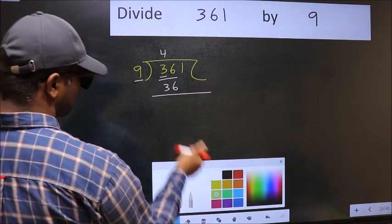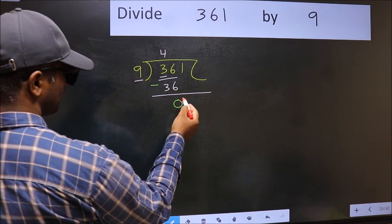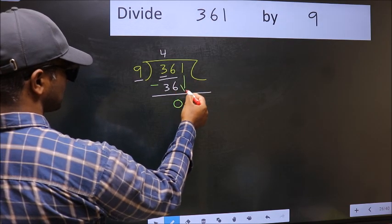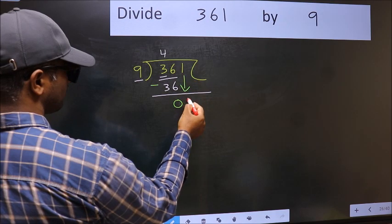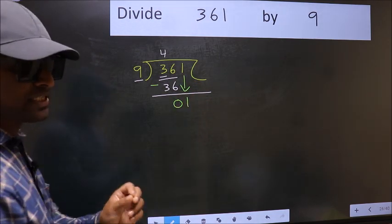Now you should subtract. 36 minus 36, 0. After this, bring down the beside number. So, 1 down. After this step, the mistake happens.